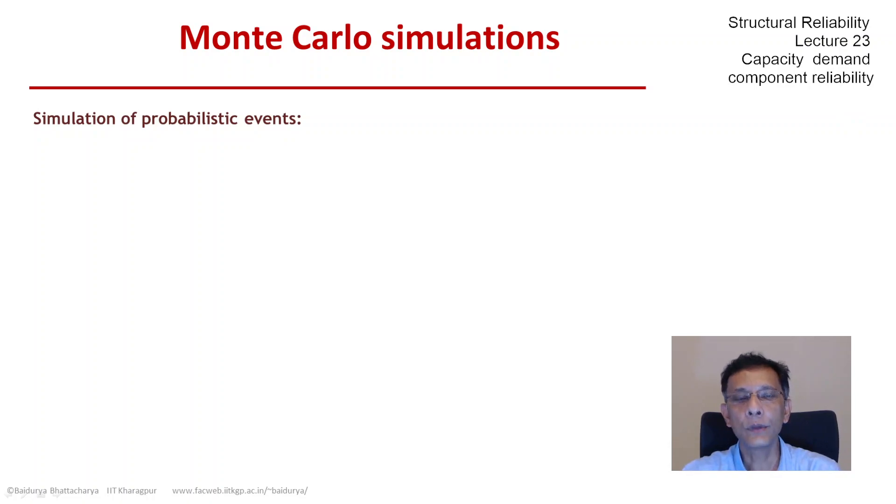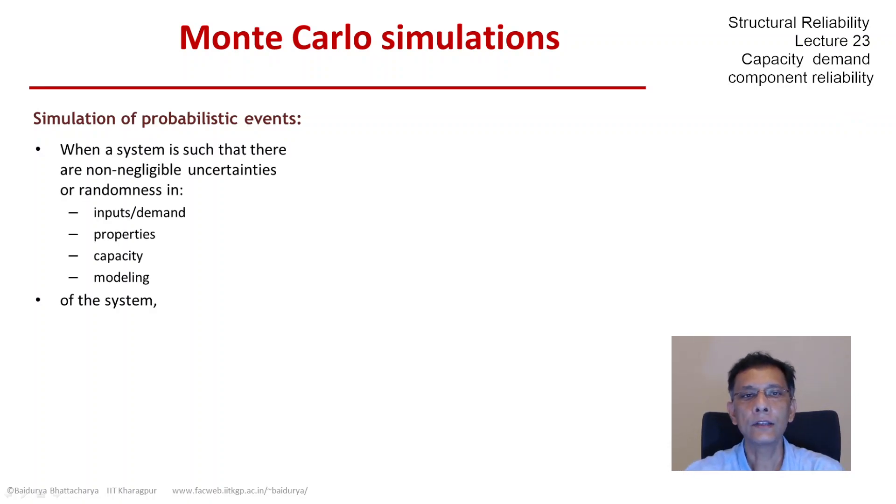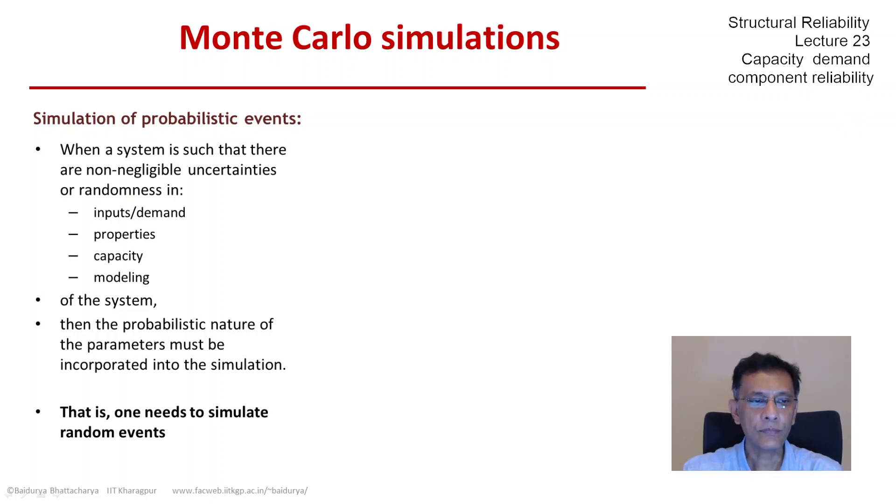If we are simulating a system and that system has non-negligible uncertainties in one or more of its aspects, then we need to incorporate that probabilistic information in the system simulation. And that can be done through Monte Carlo simulations.